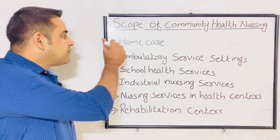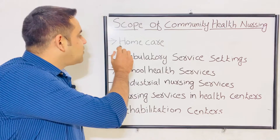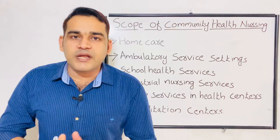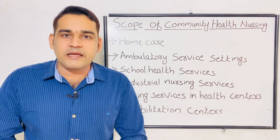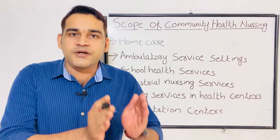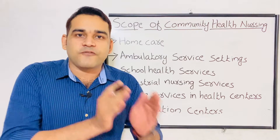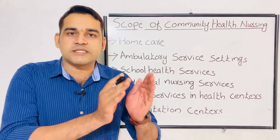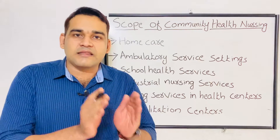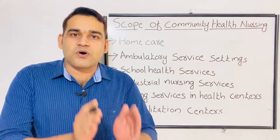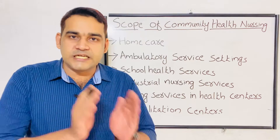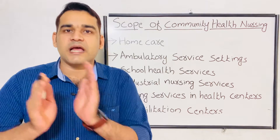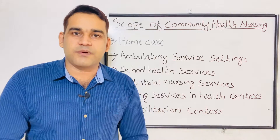The first scope is home care. In community health nursing, we are providing health services at the doorstep of the community people. So home care is a scope — we are providing care at the house or home of the patient. They are not coming to the hospital; we are providing care at their doorstep.